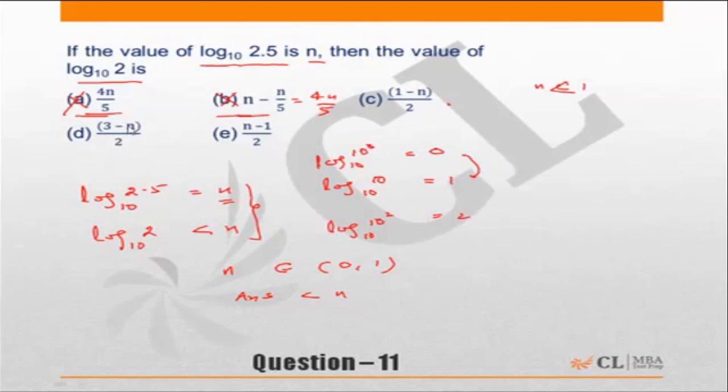Choice D: (3-n). Now n is less than 1, so 3-n will be greater than 2, which means this will be greater than 1. So this choice is incorrect because it is greater than 1.